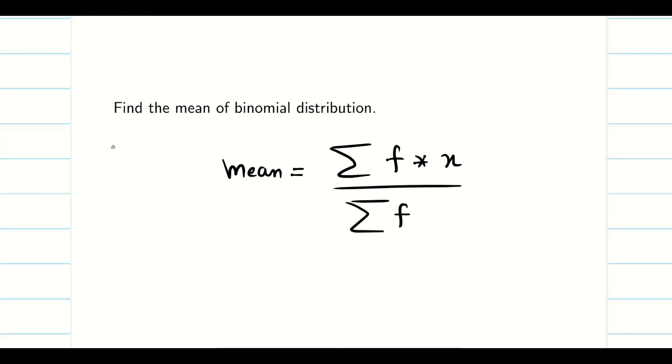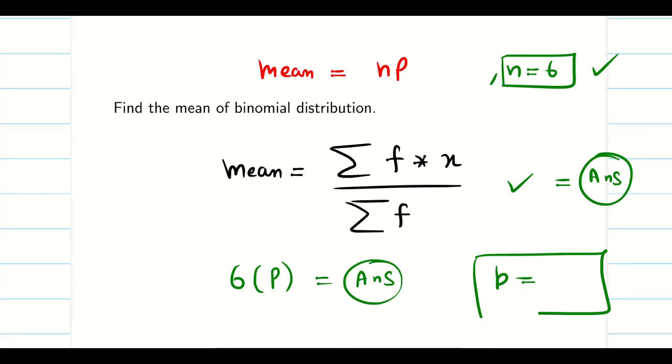Now we can find mean. But whenever I say binomial distribution, what I know? My mean is NP. And the good thing right now, we found N is equal to 6. So keeping this data and this, when I equate, I will get 6 into P. Suppose I will take this some answer. If I equate this, what I will get? I will get my P. So this is what my plan guys.